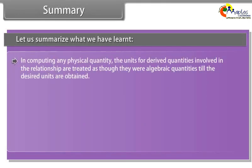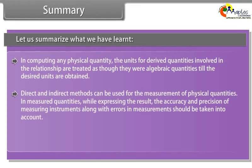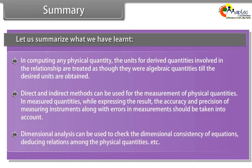In computing any physical quantity, the units for derived quantities involved in the relationship are treated as though they were algebraic quantities till the desired units are obtained. Direct and indirect methods can be used for the measurement of physical quantities. In measured quantities, while expressing the result, the accuracy and precision of measuring instruments along with errors in measurement should be taken into account. Dimensional analysis can be used to check the dimensional consistency of equations, deducing relations among the physical quantities, etc.